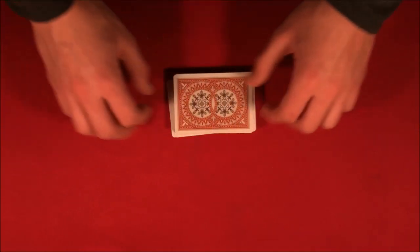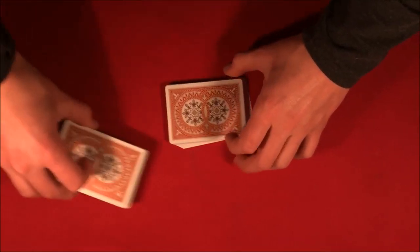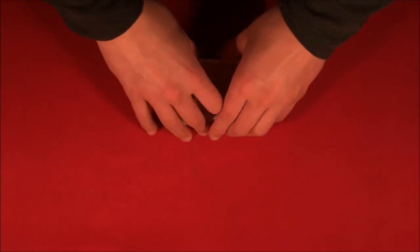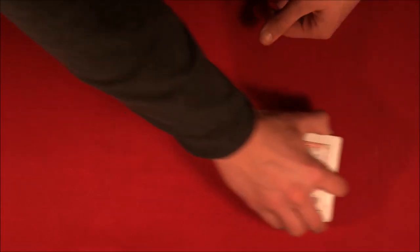But in reality nothing's happening. You still have the queen on top and the jack on the bottom. So again, you're just moving around a couple packets making it look like you're doing more than what you actually are and none of these cards are actually getting mixed up.